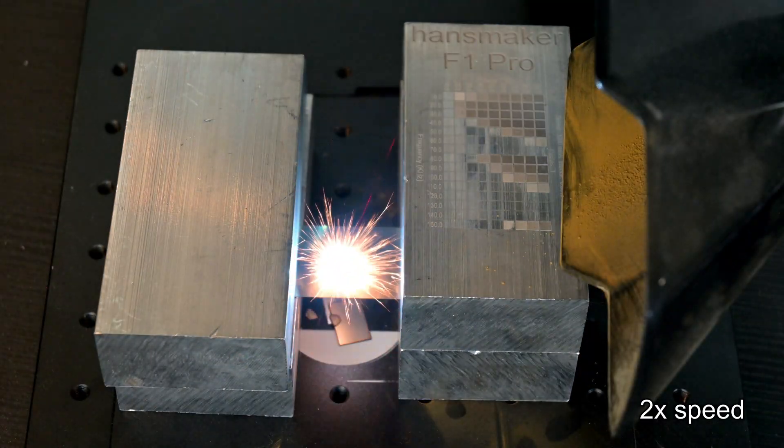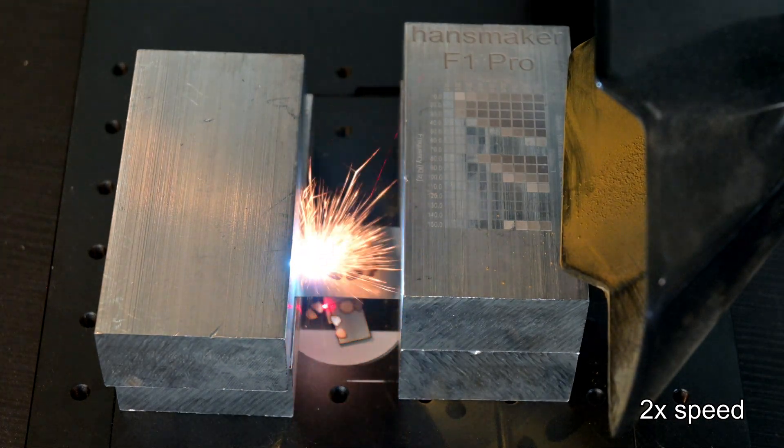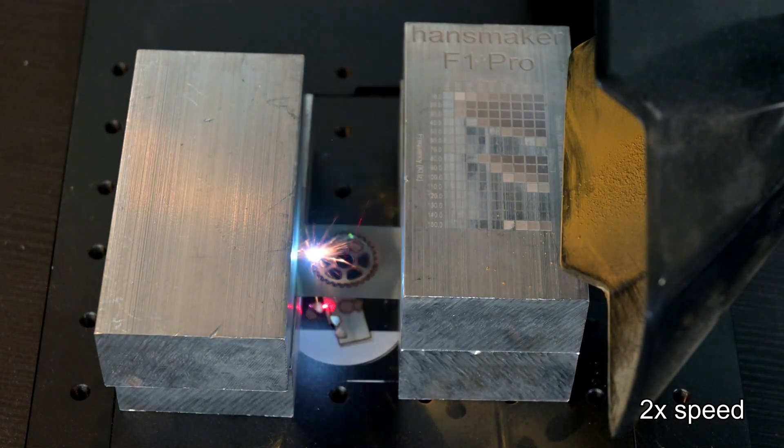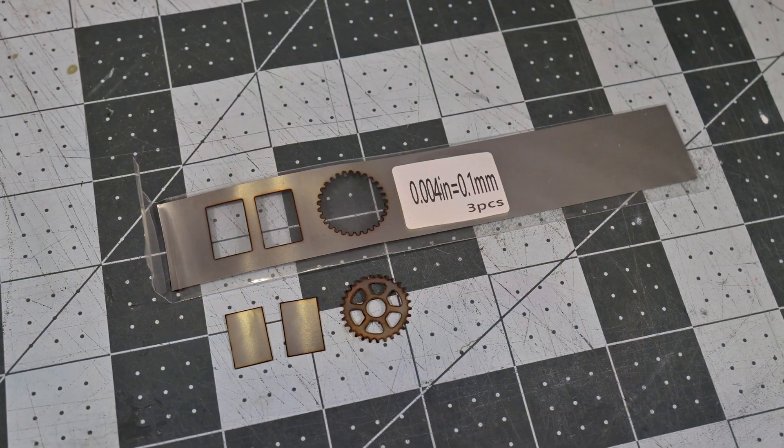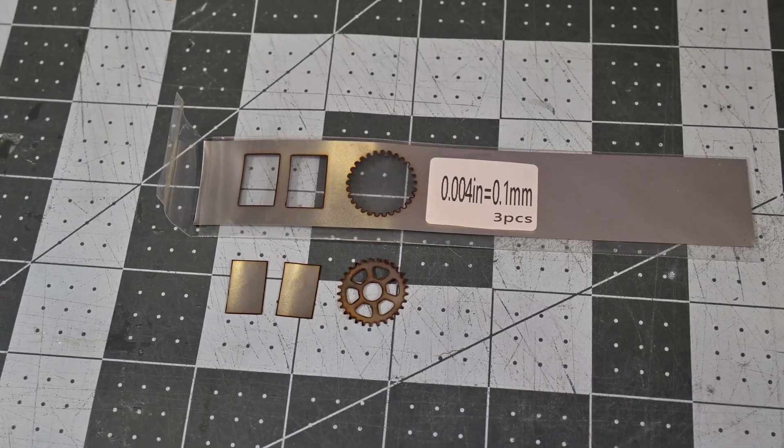But the F1 Pro can also cut through metals. I have a variety of stainless steel sheet metal, and the F1 Pro was easily able to cut through the 0.1mm steel sheet in just two passes. And it did so without major warping. This steel gear was impressive. Nice work, F1 Pro.